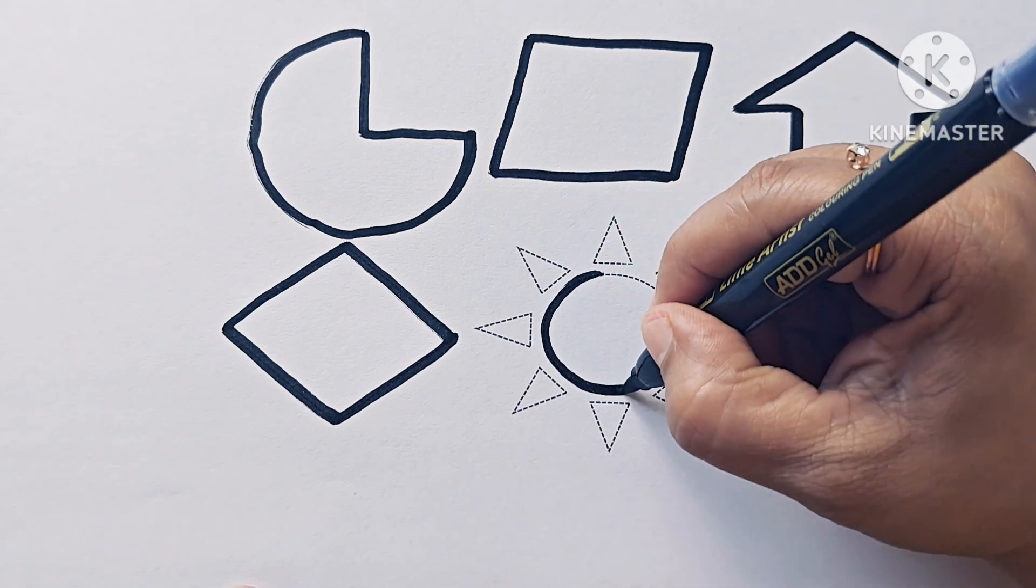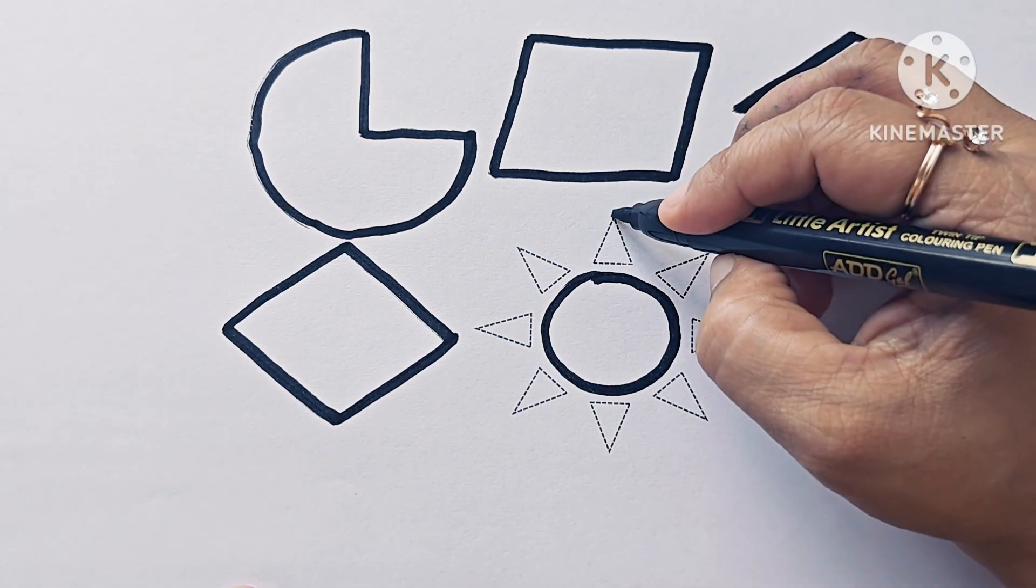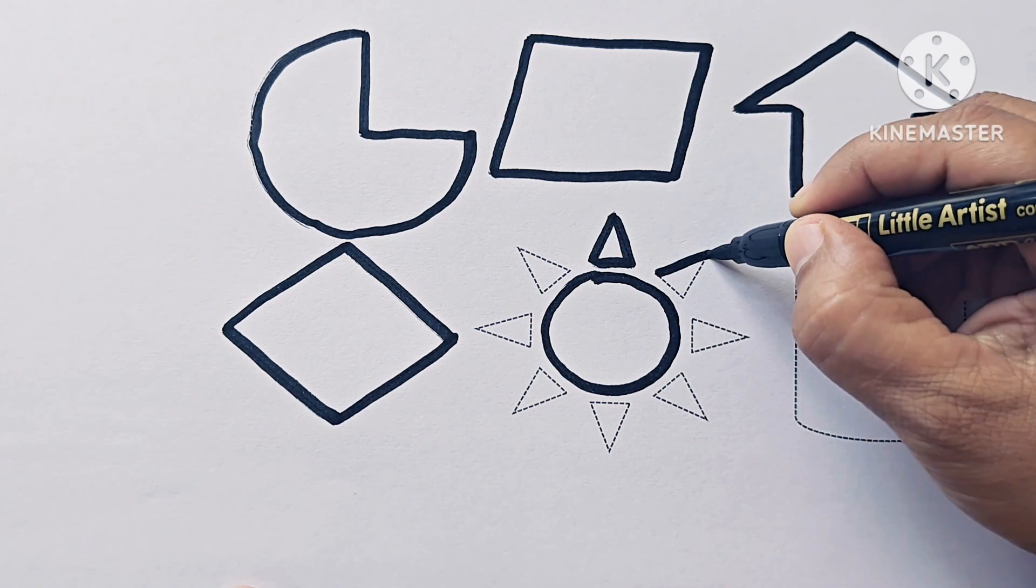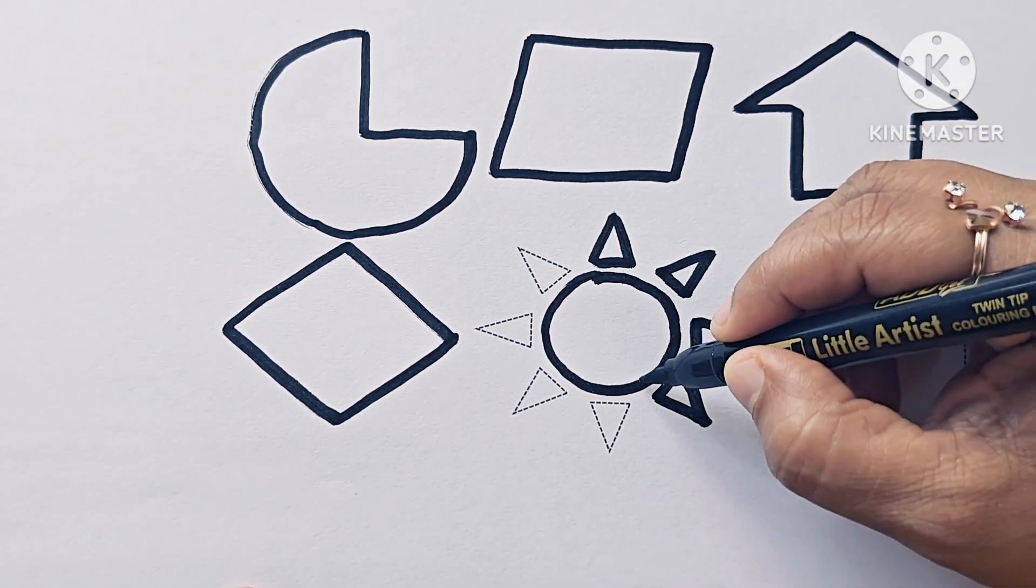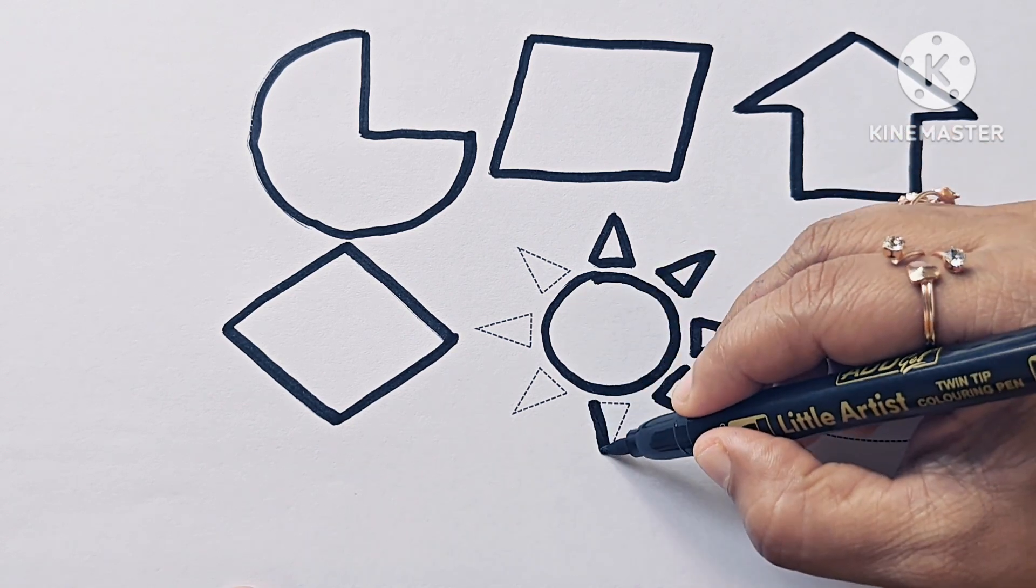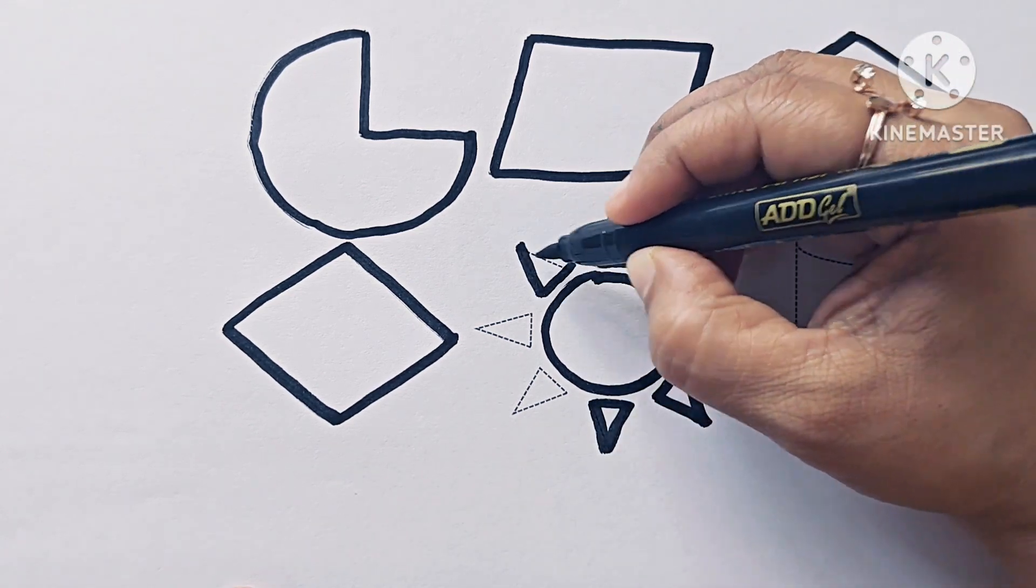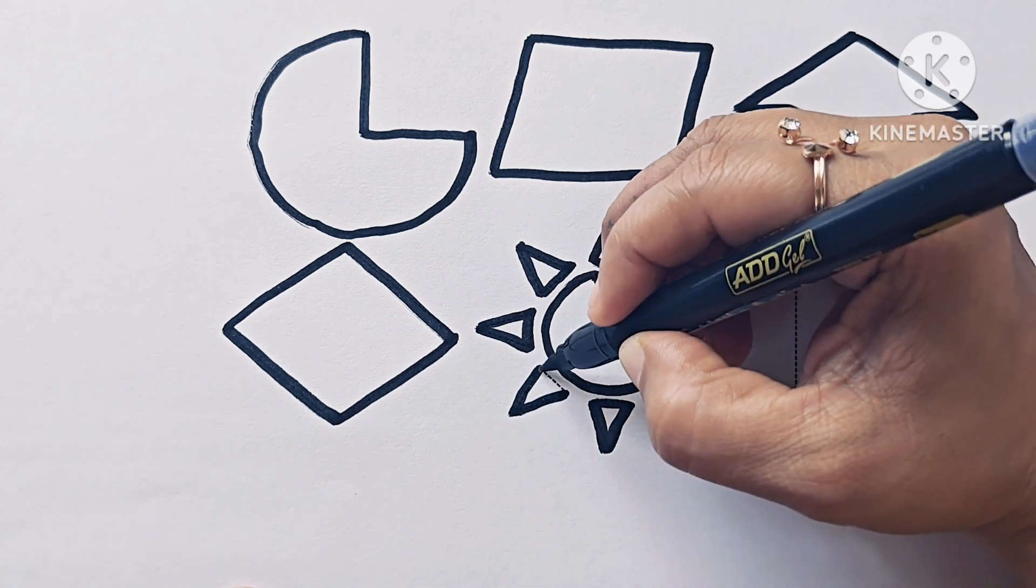This is sun. Sun is made of circle and triangles. These are triangles. This is circle. And these are triangles. This is sun.